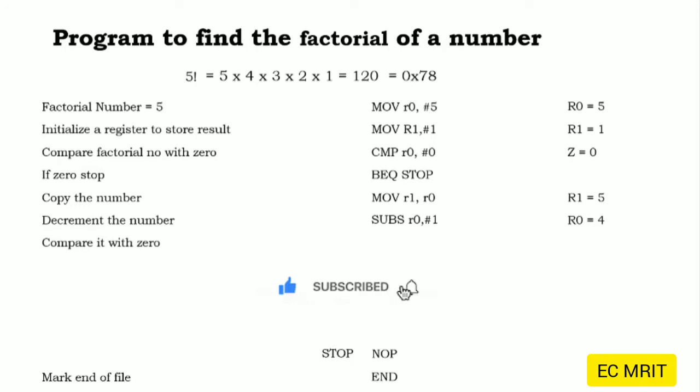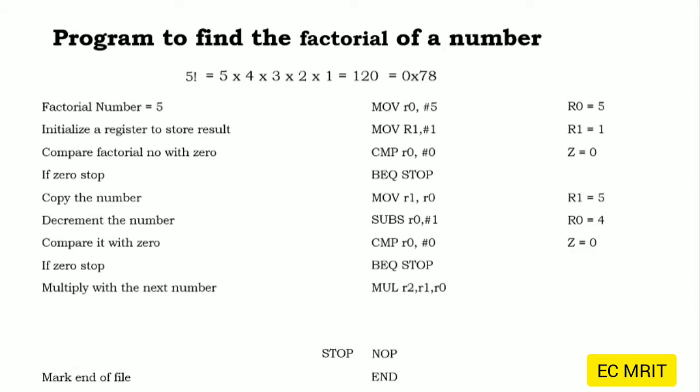We need to compare R0 with 0 before multiplying because if R0 were 0, multiplying would give 0 and we would lose the result. We write a CMP R0, #0 instruction. Since R0 is 4, the zero flag is 0 and it won't jump to stop — it will continue to the next instruction. We then multiply R1 and R0, that is 5×4, and the result is stored in R2.